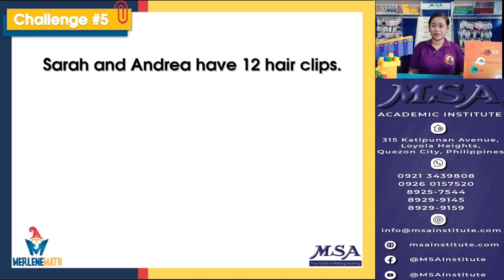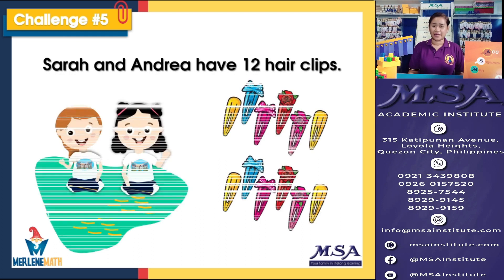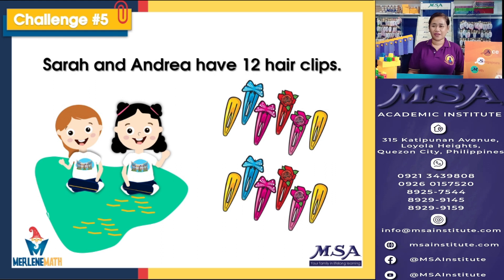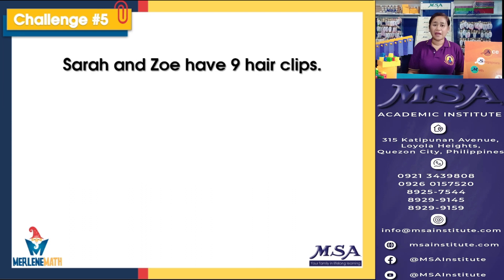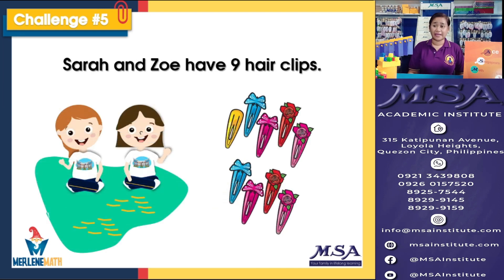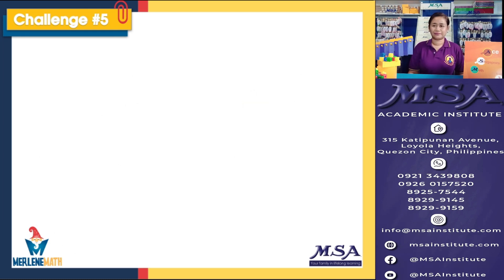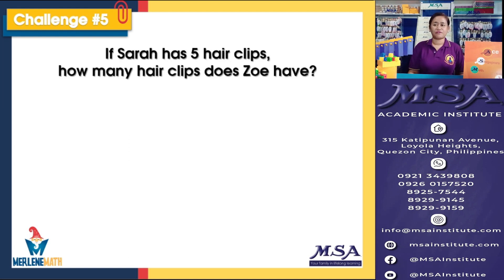Sarah and Andrea have 12 hair clips. We have their colorful hair clips for Sarah and Andrea. Sarah and Zoe have nine hair clips. So, we now have Sarah together with her other friend Zoe. If Sarah has five hair clips, how many hair clips does Zoe have?